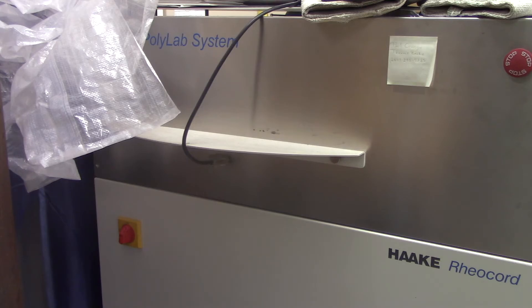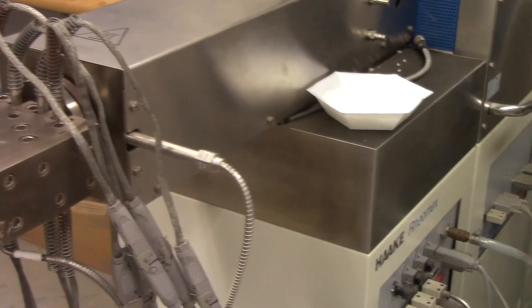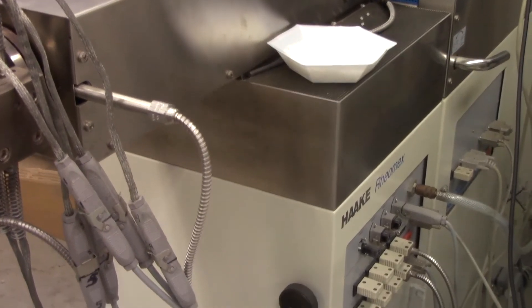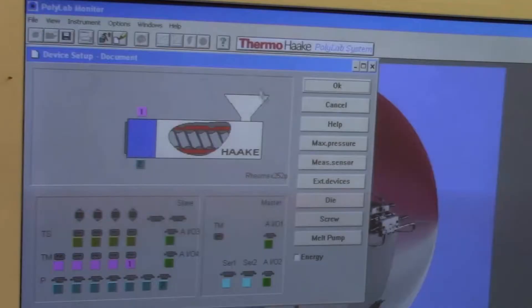We're here ready to start. Let's turn on the machine. This is our lab scale single screw extruder. Here we have a die. This is the slit die. All the connections to the heaters, the thermocouples, pressure sensors, and now ready to run the system with the software.